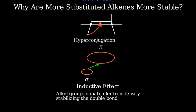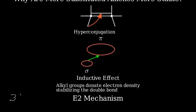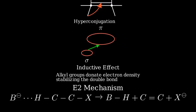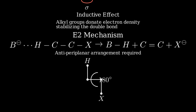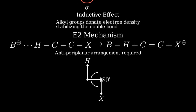Let's look at how the Zaitsev rule applies in the context of the E2 mechanism. In an E2 elimination, the base removes a beta-hydrogen while the leaving group departs simultaneously. The reaction requires an anti-periplanar geometry, meaning the hydrogen and the leaving group must be positioned 180 degrees away from each other.